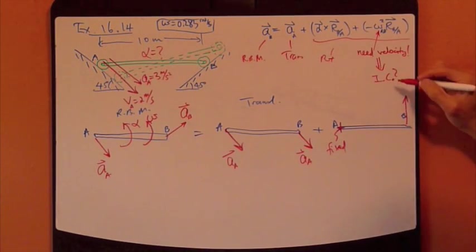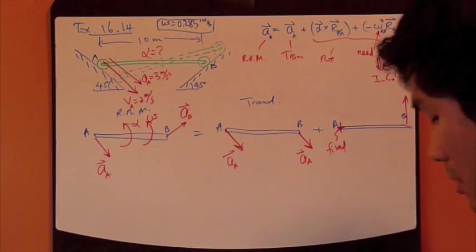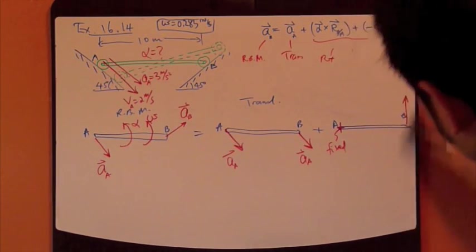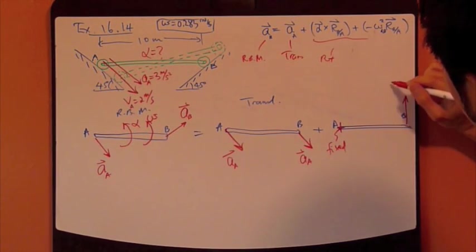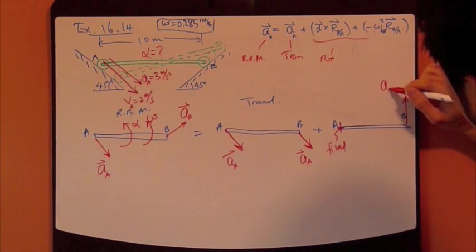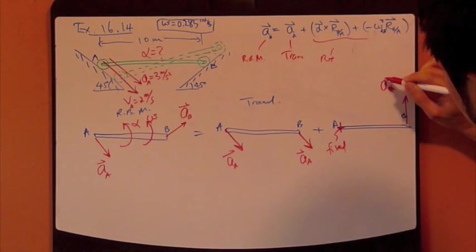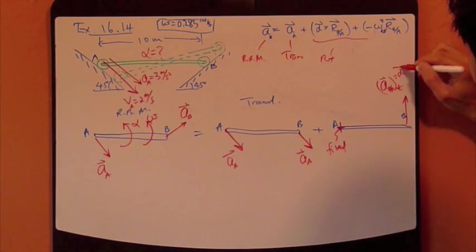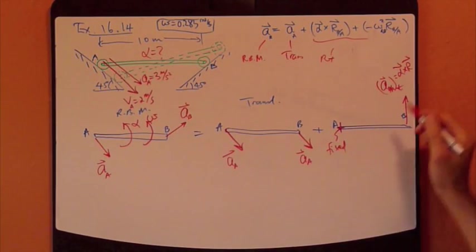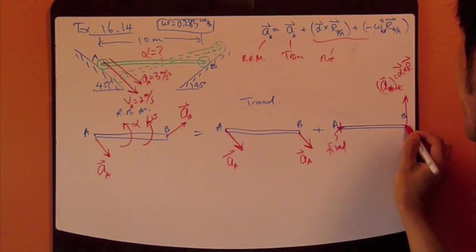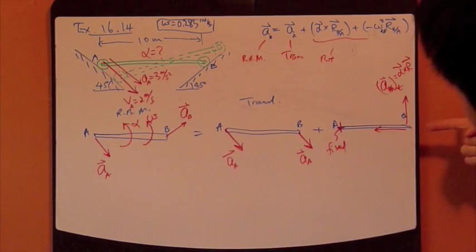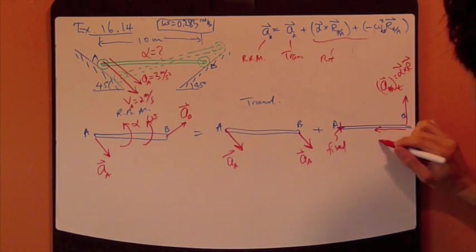So that is that term right there, which is, erase these things, which is, I'm going to be tangent. Equals alpha cross R. And then I have the normal component going that way. Into the point of rotation, and that is, right,